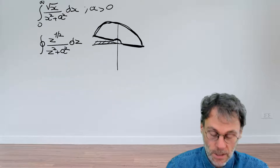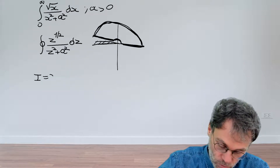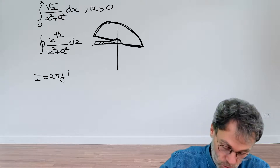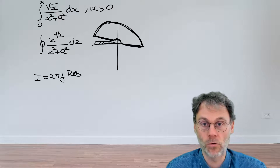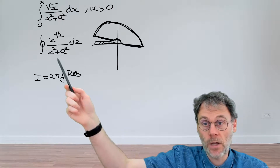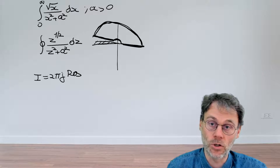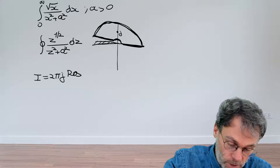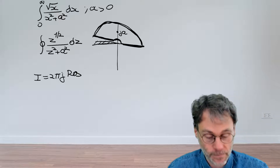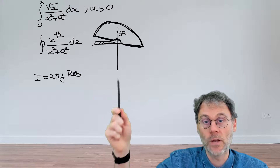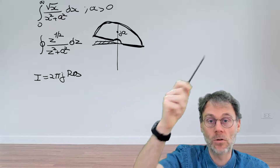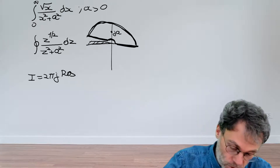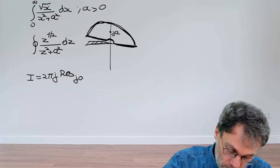Residue calculus tells us that the contour integral equals 2πj times the sum of all residues inside the contour. Looking at the denominator, it vanishes at ja and -ja. In our case we only need to worry about ja, because a is positive and as we take the radius to infinity, we will always include the point ja. That's the only residue we need.